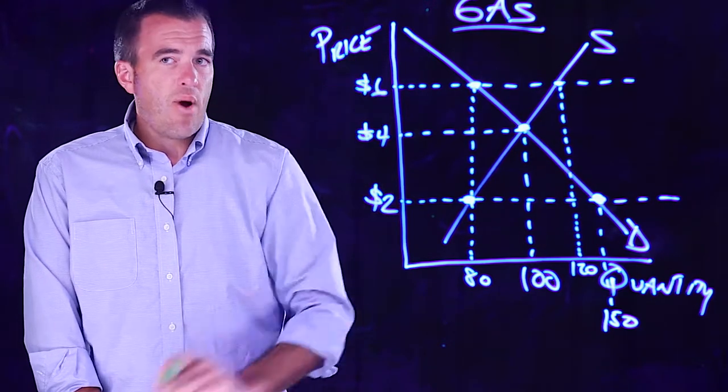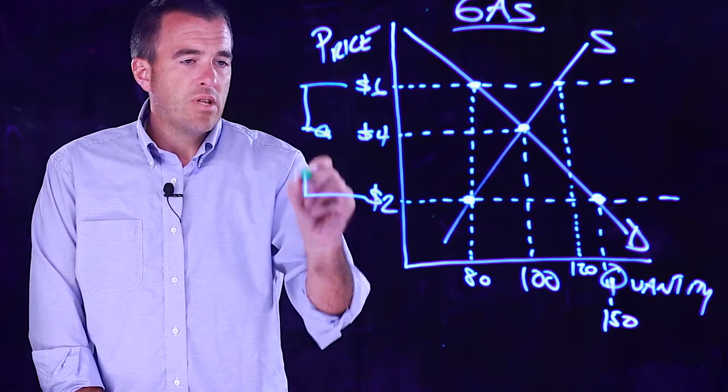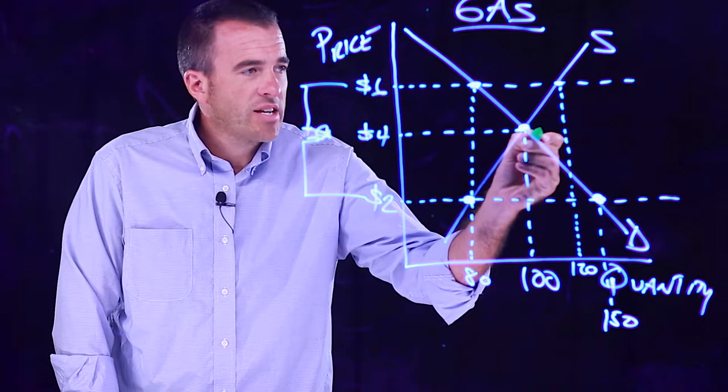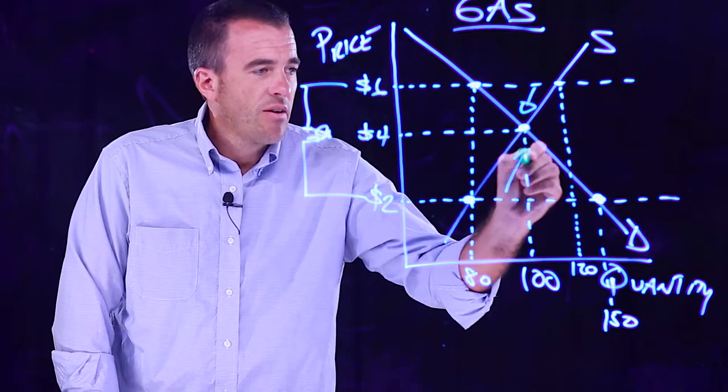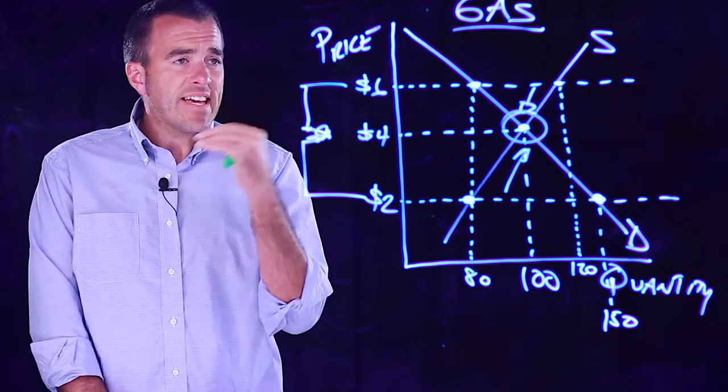But what's nice about this graph is everything is always going towards equilibrium. In each instance, market prices are flexible and gravitate towards equilibrium at every instance. And that's a good thing.